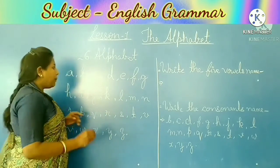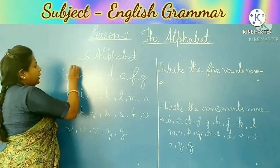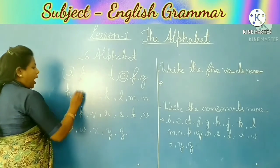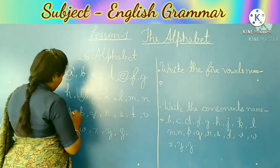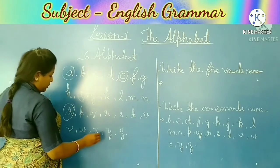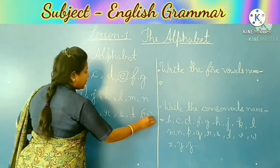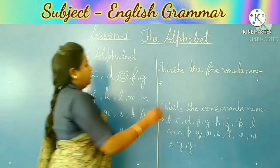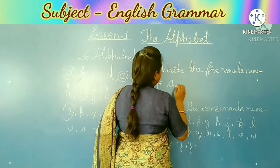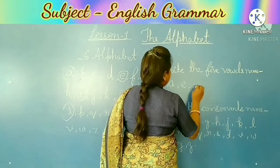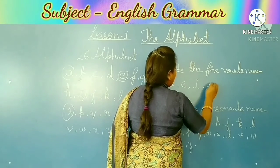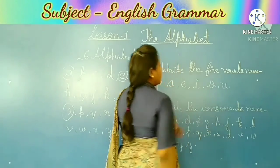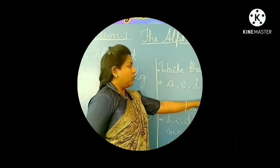So children, now look at the board. Your vowels are A, E, I, O, and U. Yeh aapke five vowels hain: A, E, I, O, U — these are your five vowels.